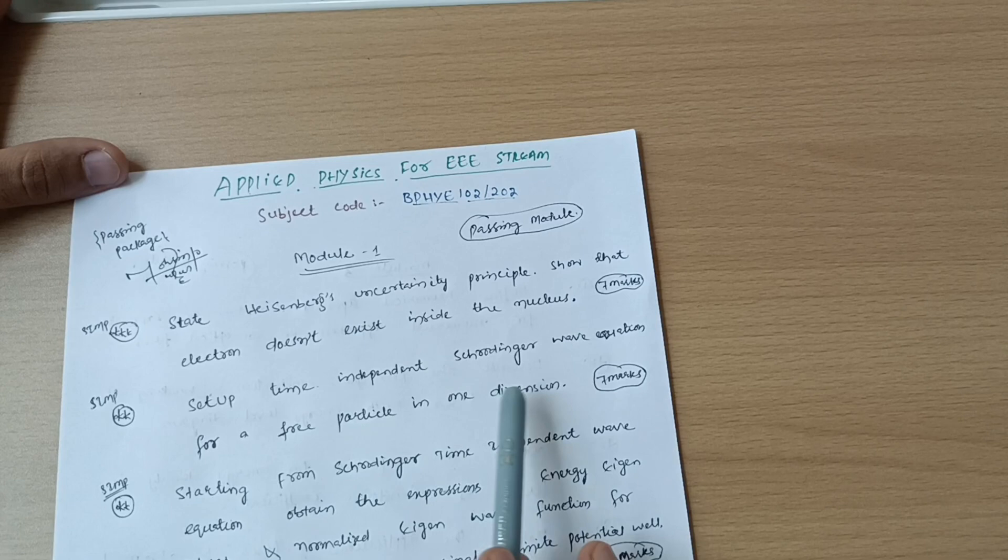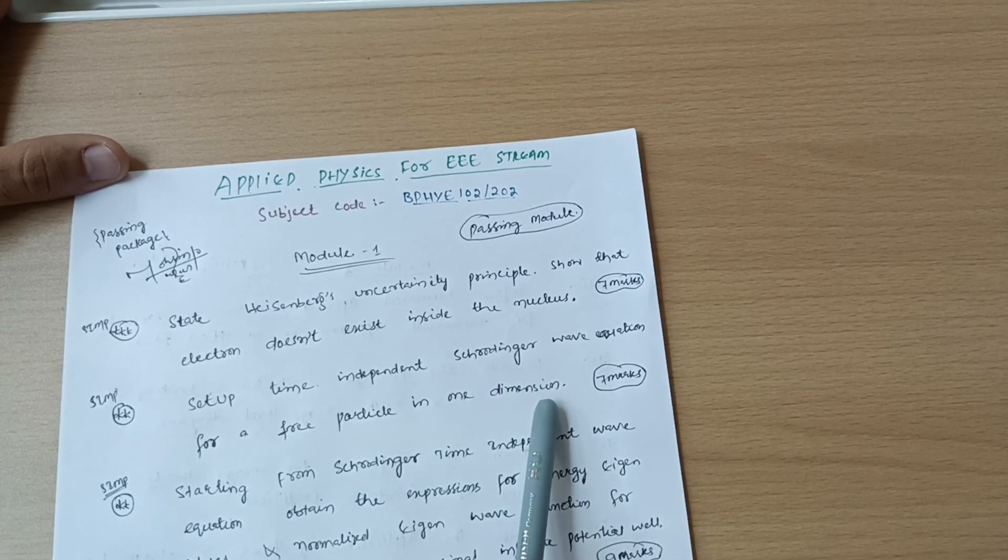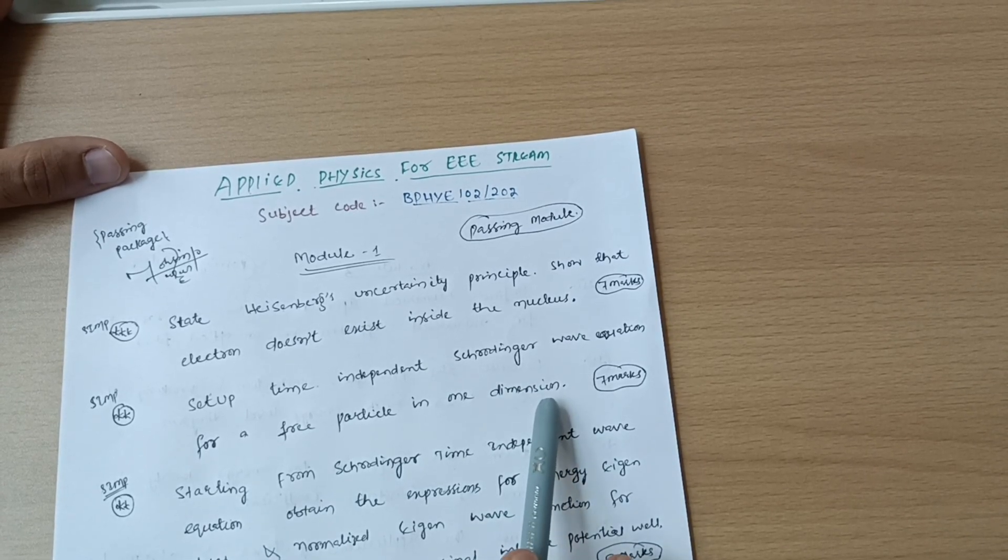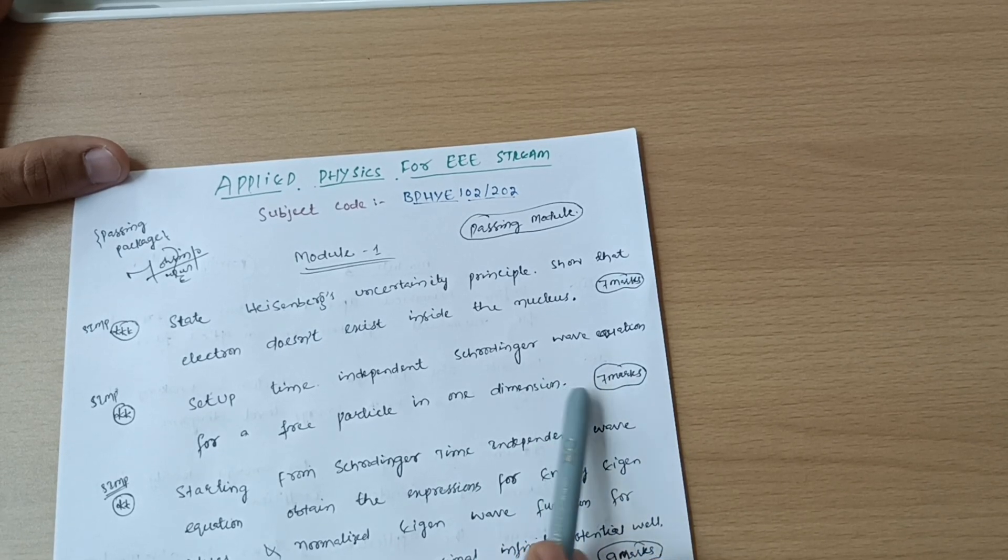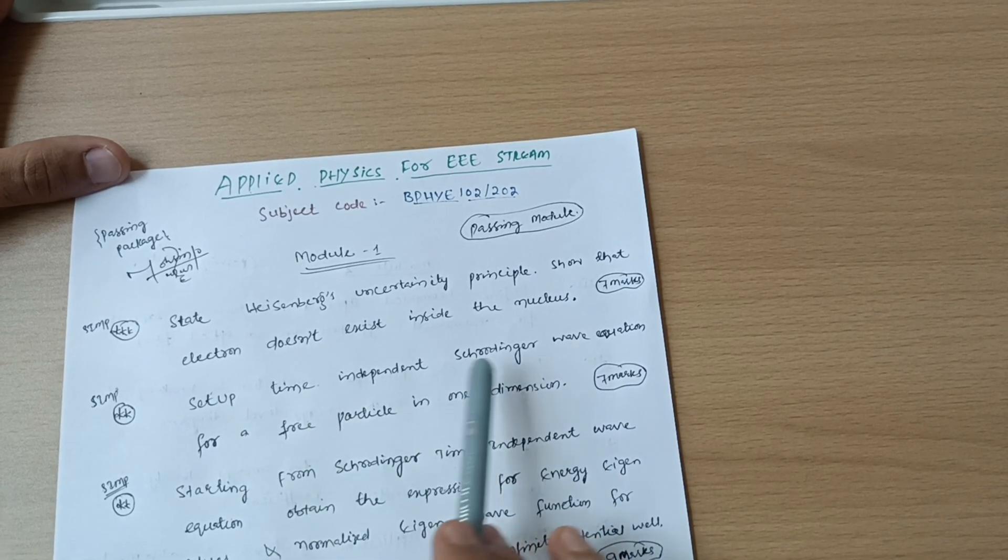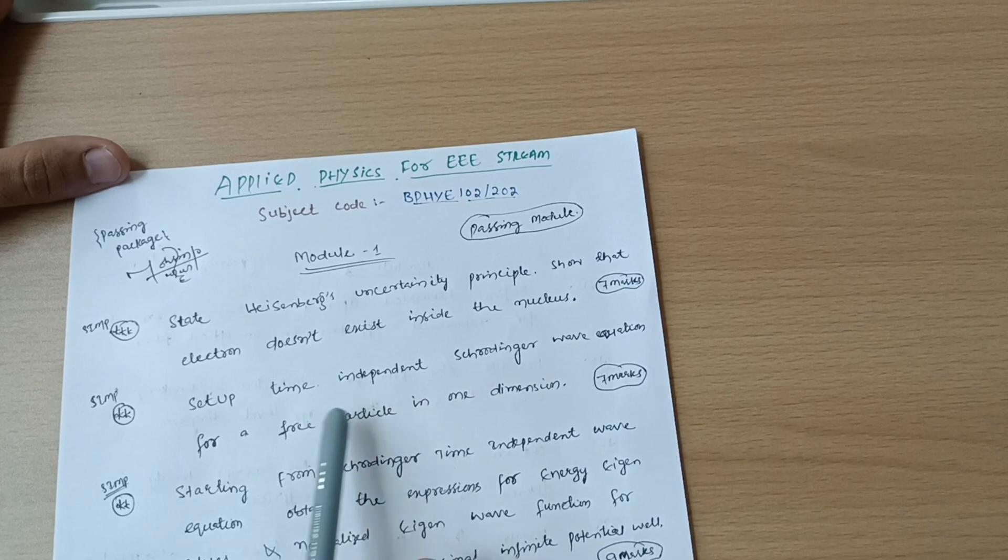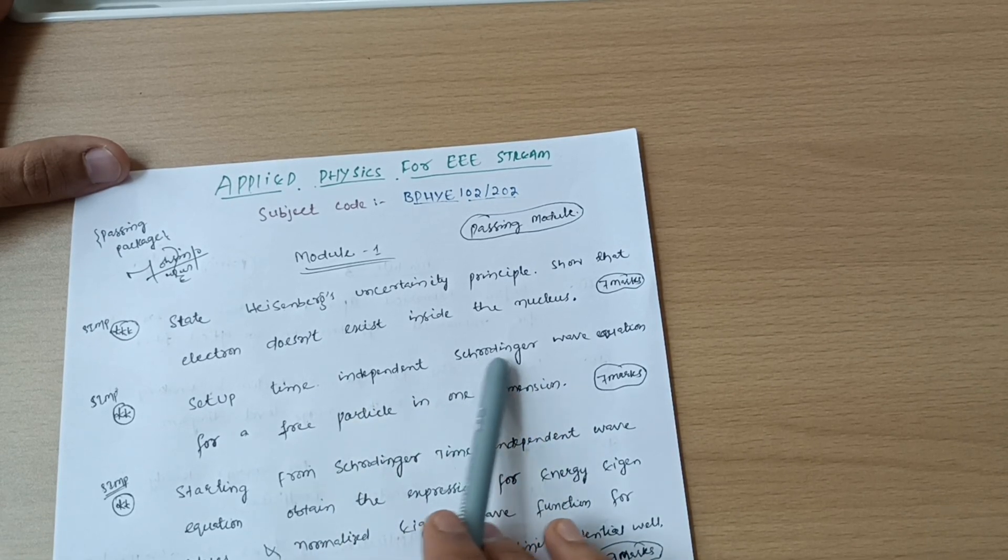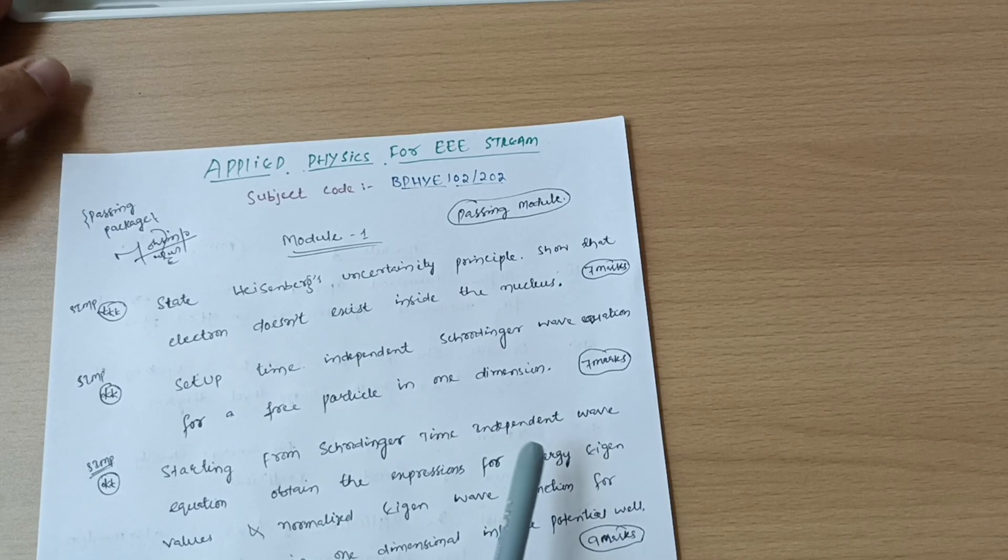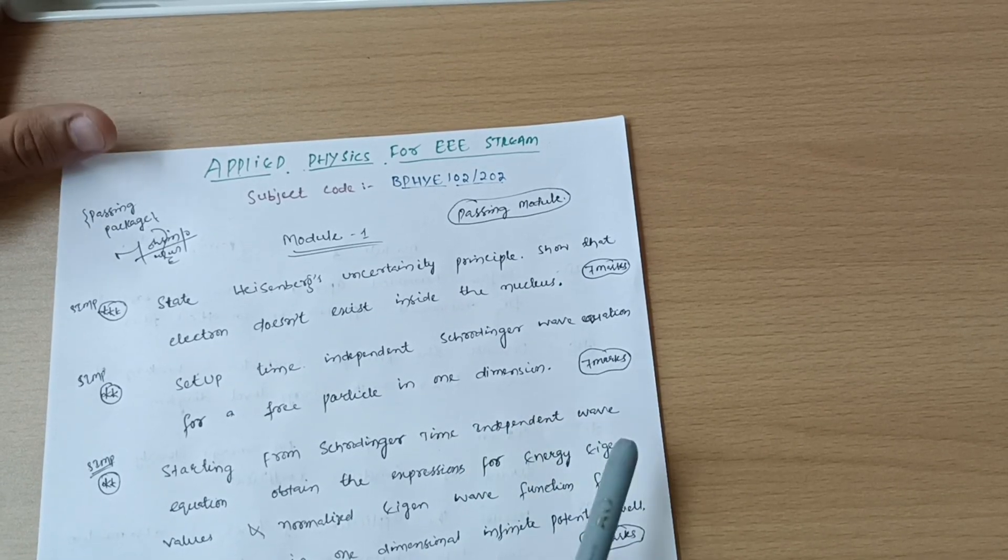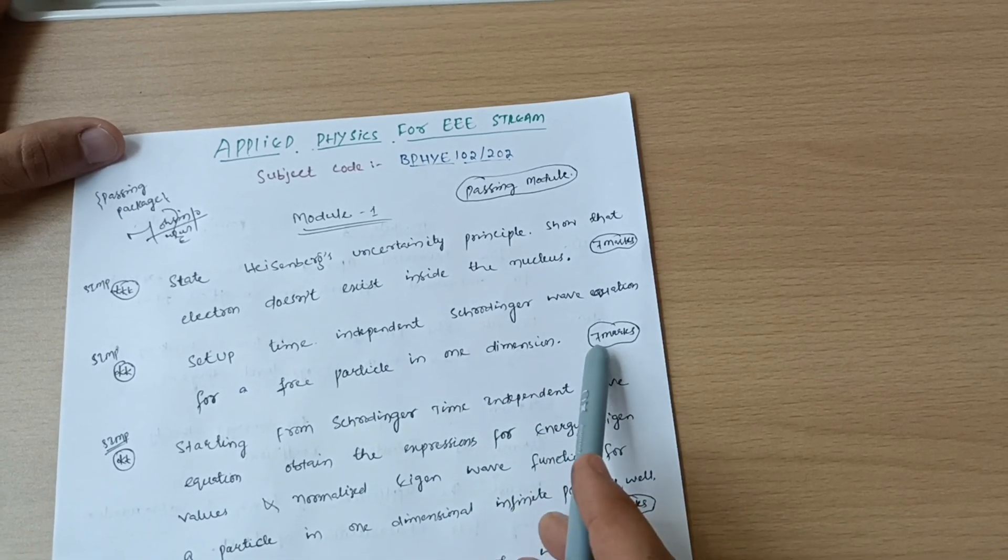Next is set up a time independent Schrödinger wave equation for a free particle in one dimension, and sometimes they will ask you write down the expression for three dimensions also. No need to derive the third dimension, only you have to derive the equation Schrödinger wave equation in one dimension, but they may ask you sometimes write down the equation for third dimension also. This may be also seven marks.